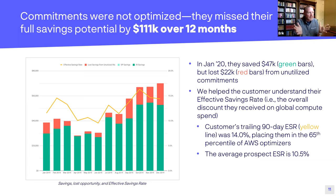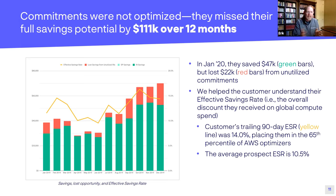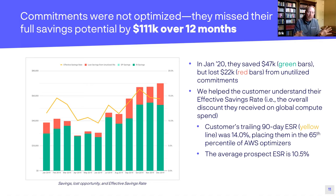At the end of the day, how much is the customer actually saving? That's represented by the gold line, which is the effective savings rate. The trailing 90-day effective savings rate was about 14%. The average we see is about 10.5%, so this customer is above average. But our service is going to take the ESR to 40% and above, so there's still a significant amount of savings that is in effect guaranteed our service will unlock — if our automation, algorithms, and opinionated approaches are put into effect. Our savings analysis quantifies how much they can expect to achieve and over what timeframe.